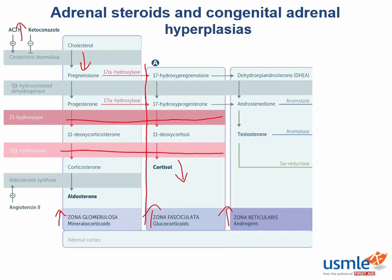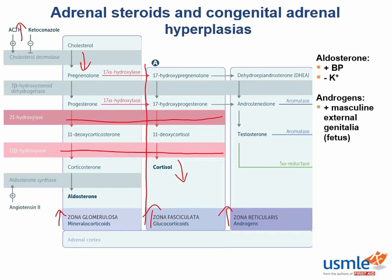Let's recap what they do, starting with aldosterone. Aldosterone increases blood pressure by causing salt and fluid retention, but sacrifices potassium for sodium via the sodium-potassium pump. What about androgens? In a fetus, they cause the development of male external genitalia. In adolescence, they cause the development of male secondary sexual characteristics.